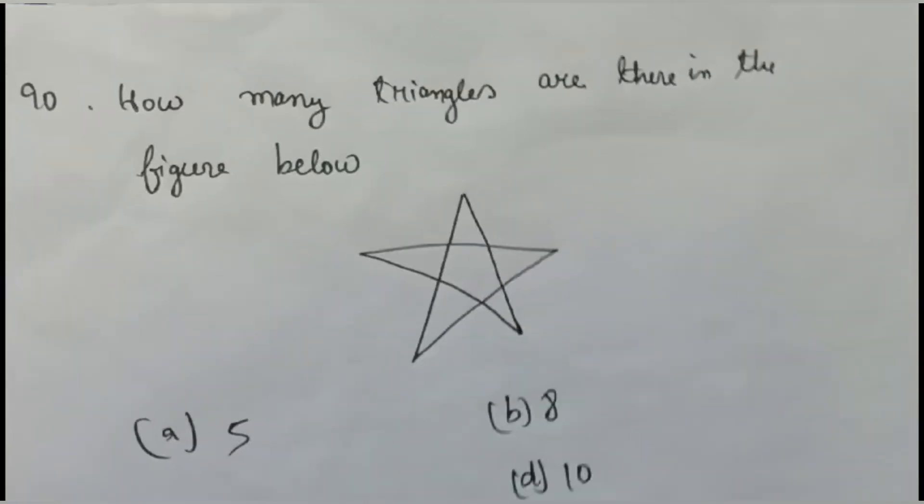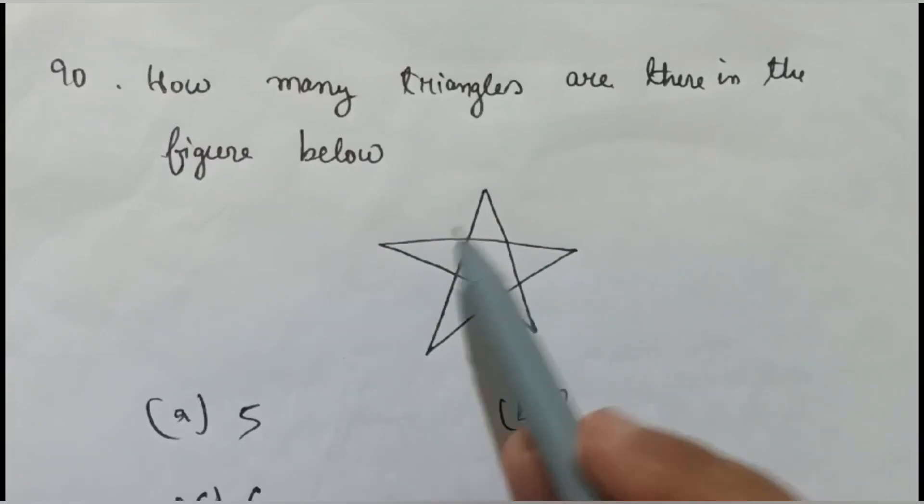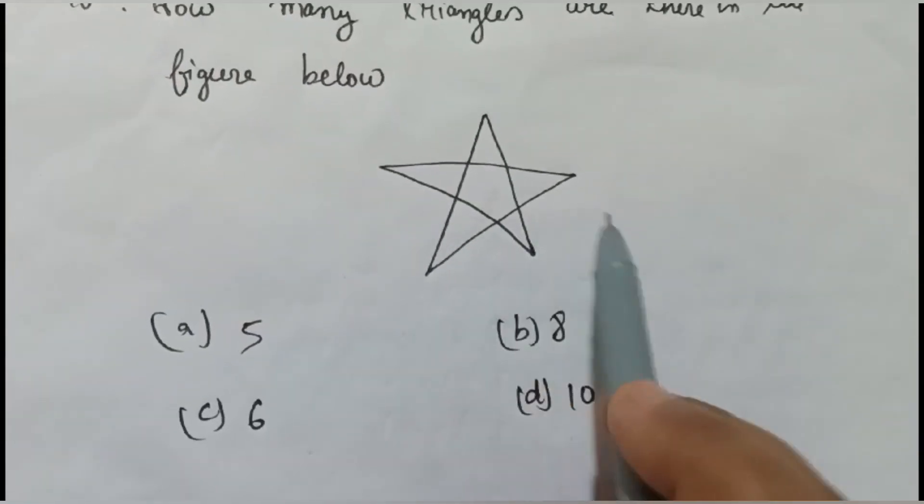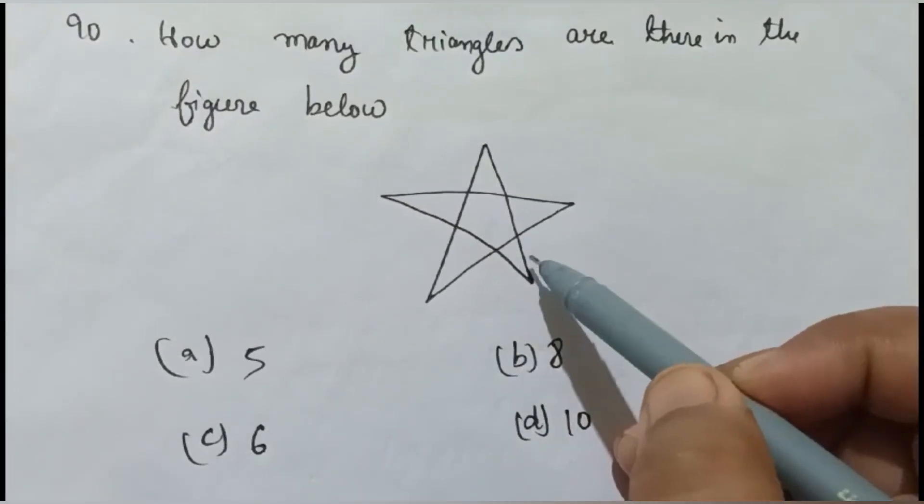Now let us see question number 90. How many triangles are there in the figure below? Here the figure is given. This figure is a star, so we have to find out how many triangles are there.